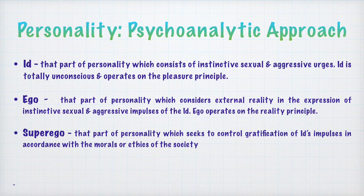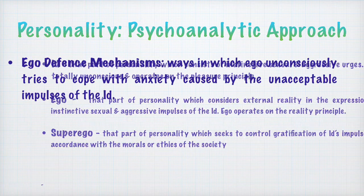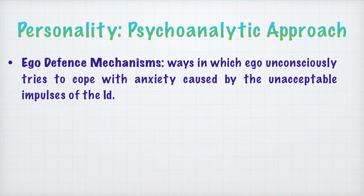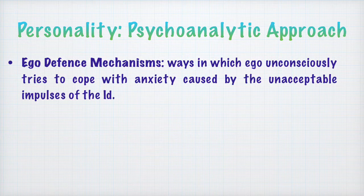How the ego is able to strike this balance between its impulses and external reality is dependent upon ego defense mechanisms. Ego defense mechanisms are the ways in which the ego unconsciously tries to cope with anxiety caused by the unacceptable impulses of the id. Ego defense mechanisms are those mechanisms or ways in which the ego tries to handle the anxiety caused by the impulses, memories, and thoughts within the id of an individual.